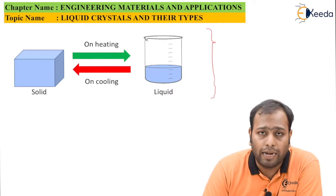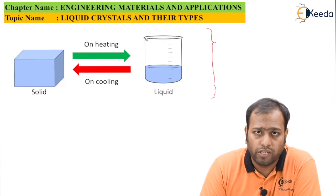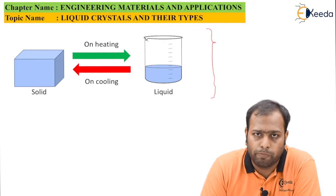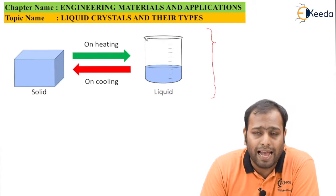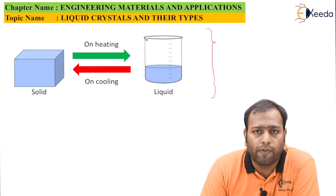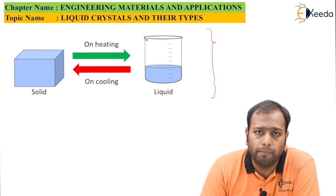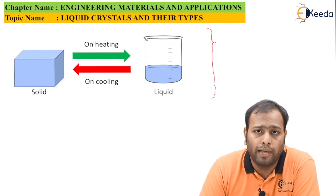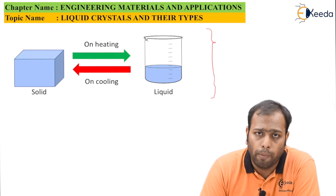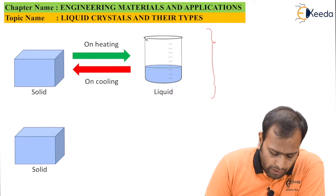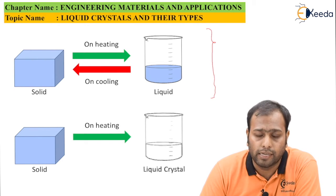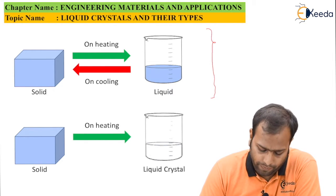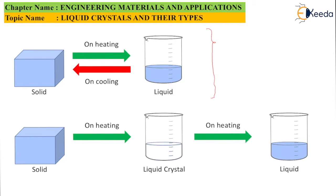This was the general observation until the year 1888, when an Austrian botanist heated a chemical during his experiment. He did not intend to discover anything new, but accidentally, on heating that material, he found that it goes through an intermediate state between the solid and the liquid — and hence the concept of liquid crystals came into picture.